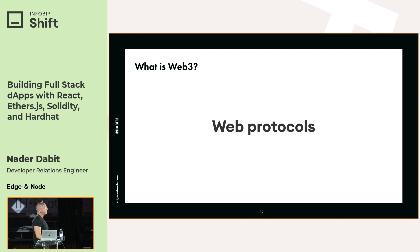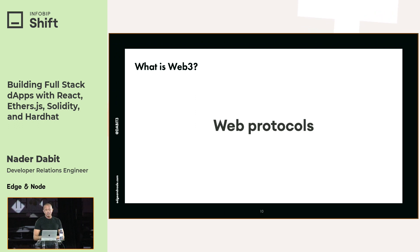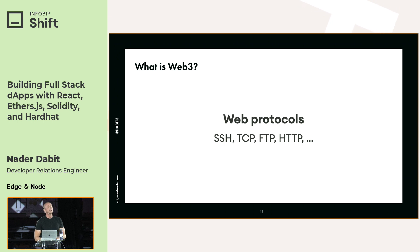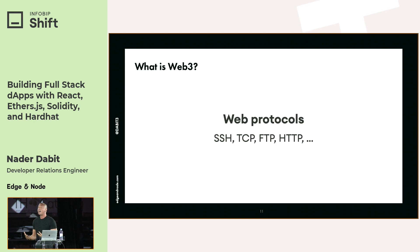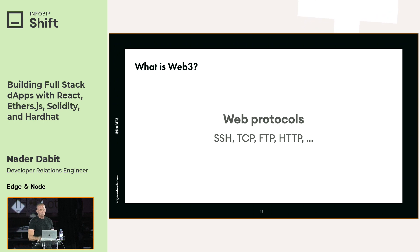When the original Internet existed, it became successful in part because we have built-in web protocols that all of us can use. When you think about creating a website and interacting with it, we're using protocols every day — consistent across the entire world. Anyone accessing a website via HTTP can do it without any centralized intermediary. We use things like TCP, FTP, and SSH.